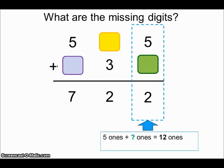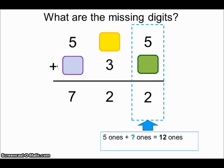Let's look at the ones. 5 ones plus what ones give me 12? You are right! It's 7. So 5 plus 7 equals 12, and I write 2 here and 1 here.